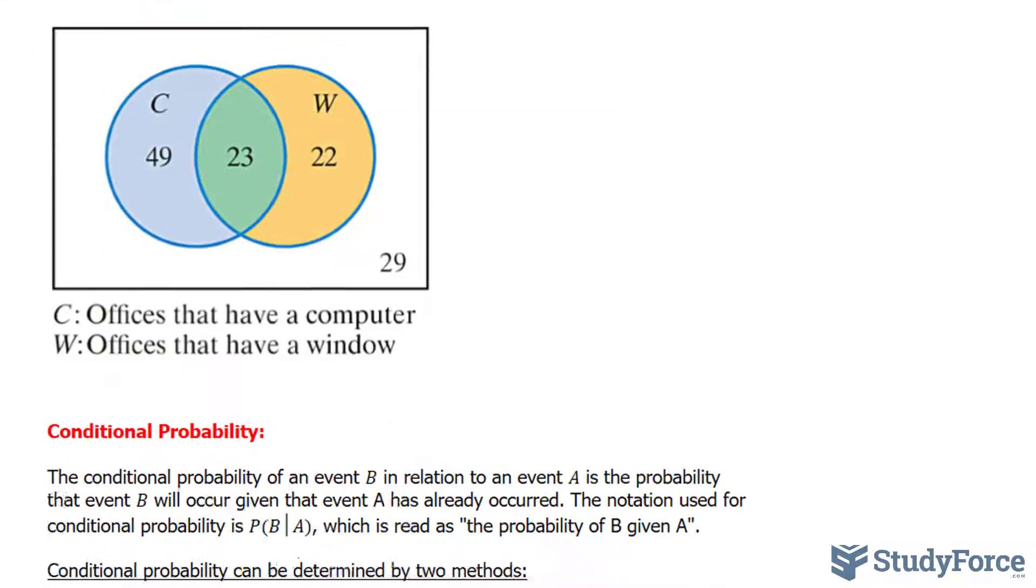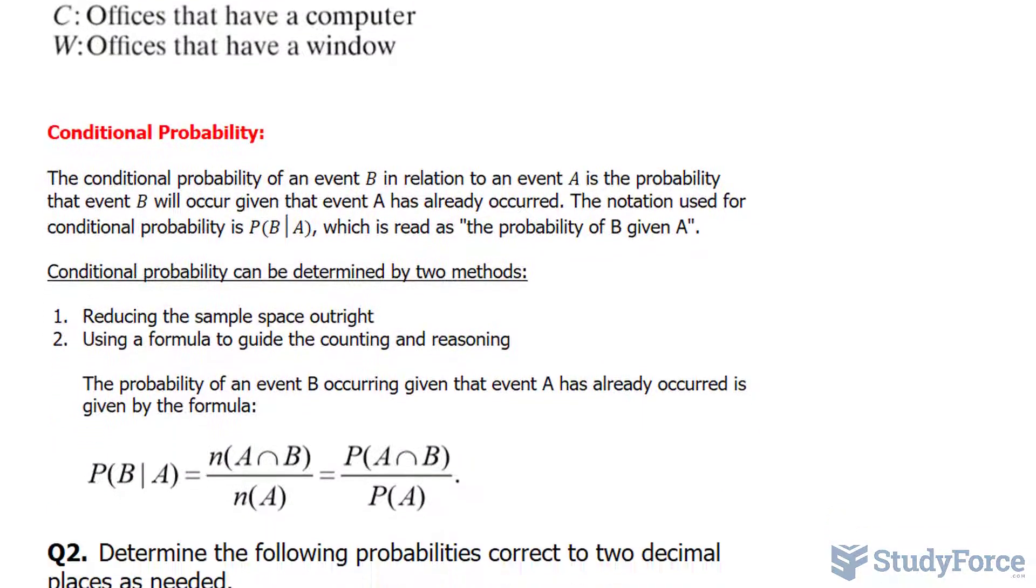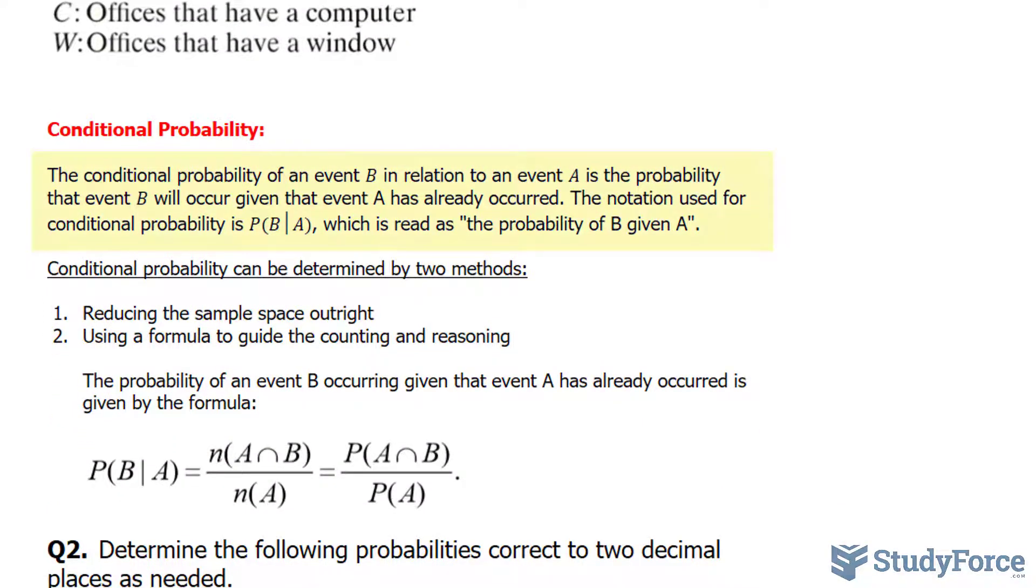Before we answer this, let's have a quick discussion on conditional probability. The conditional probability of an event B in relation to an event A is the probability that event B will occur given that A has already occurred.